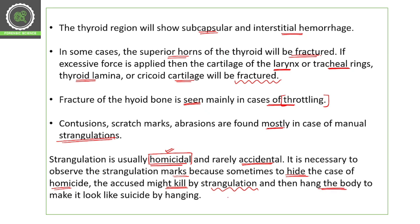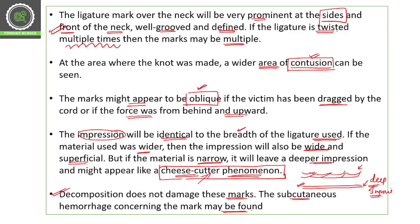It is necessary to observe strangulation marks carefully because to hide a case of homicide, the accused might kill by strangulation and then hang the body to make it appear like suicide by hanging. That is why we must closely observe all internal and external postmortem findings — they are critically important in such cases.